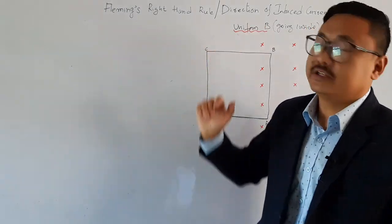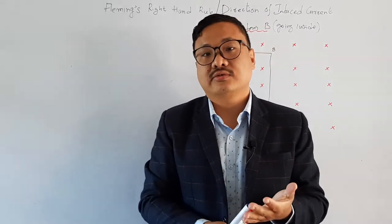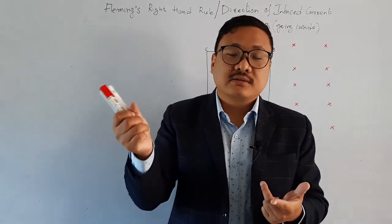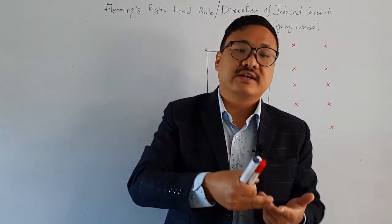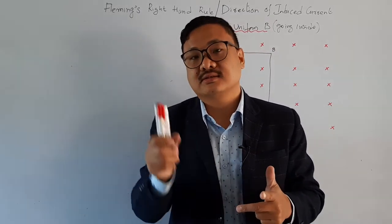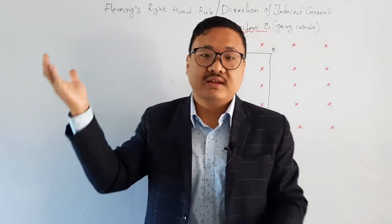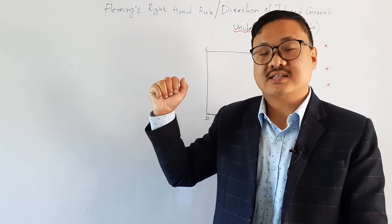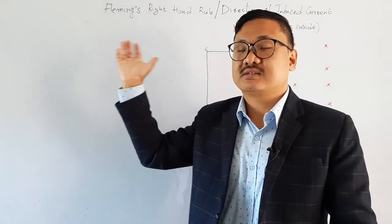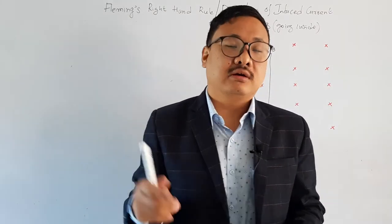The topic is Fleming's Right Hand Rule, or direction of induced current. Last time we studied Fleming's Left Hand Rule. Fleming's Left Hand Rule gives the direction of force experienced by a current-carrying conductor in a magnetic field, and that force is a vector quantity. But in Fleming's Right Hand Rule, it gives the direction of induced current.